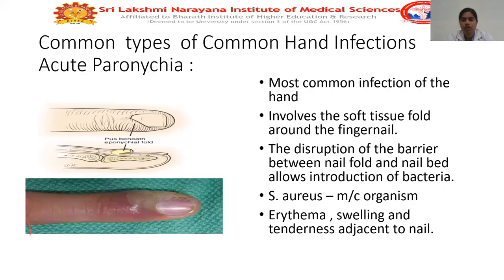Coming to common types of hand infection — acute paronychia. Acute paronychia is the most common infection of the hand. It involves the soft tissue fold around the fingernail. Disruption of the barrier between the nail fold and the nail bed introduces bacteria. Staphylococcus aureus is the most common organism. Pus accumulates beneath the epinychial fold, causing erythema, swelling, and tenderness adjacent to the nail.